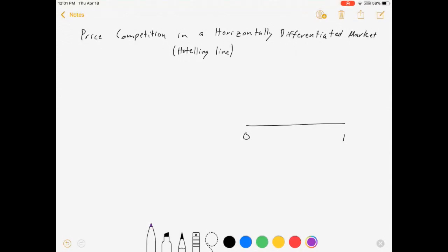For instance, I might have a consumer who lives right here. And that consumer might have to choose between two firms, firm A and firm B. For the sake of putting numbers in our example, let's say that A is on point two and B is on one.